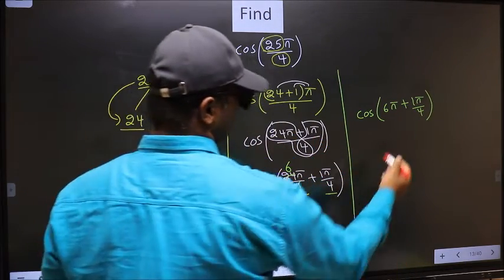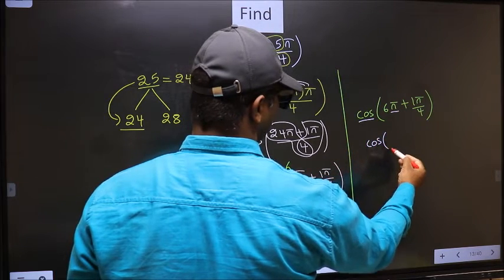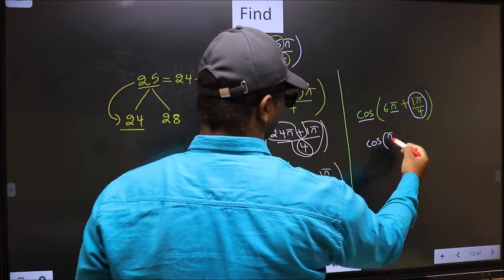Next. Here we have pi. So cos is not going to change. It will remain cos. And inside we get this angle. Pi by 4.